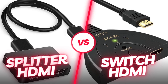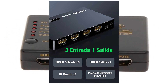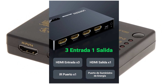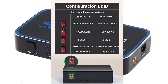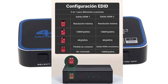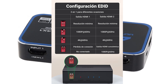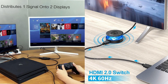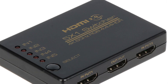An HDMI splitter takes one HDMI input signal and splits it into multiple HDMI output signals, allowing you to connect one source device to multiple displays so the same video and audio content is displayed simultaneously. An HDMI switch, on the other hand, allows you to connect multiple HDMI source devices to a single HDMI input on a display, so you can switch between connected devices without manually disconnecting and reconnecting cables. A typical HDMI switch has multiple HDMI input ports and one HDMI output port.